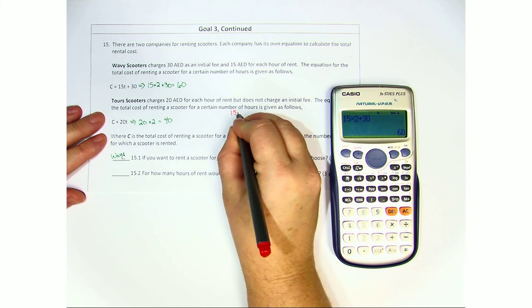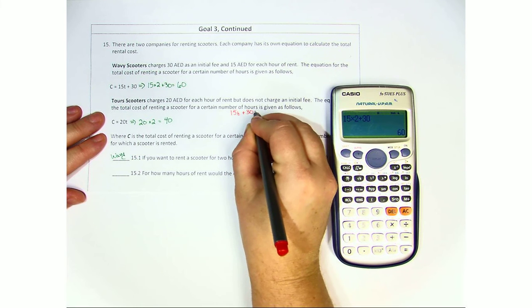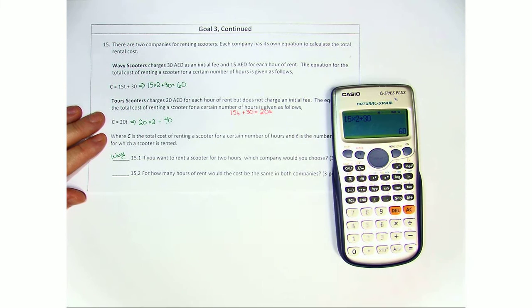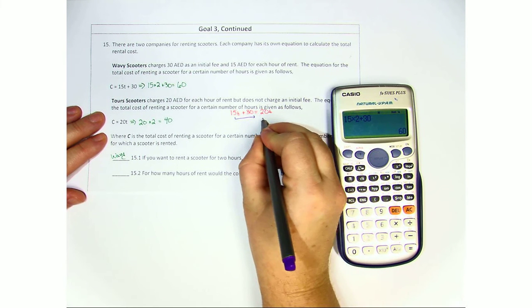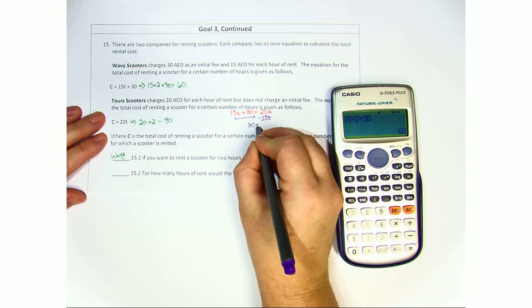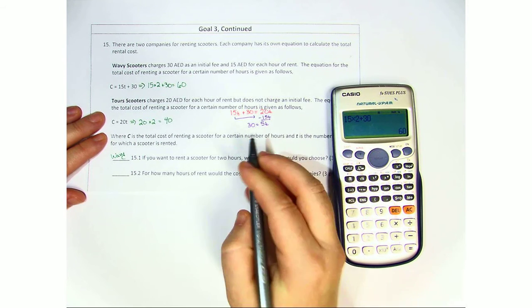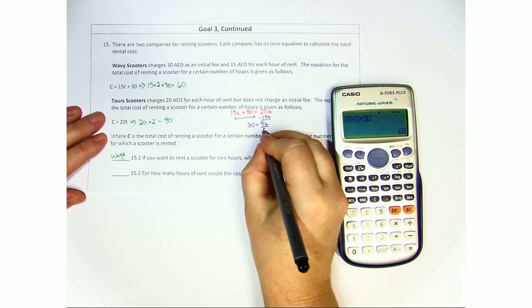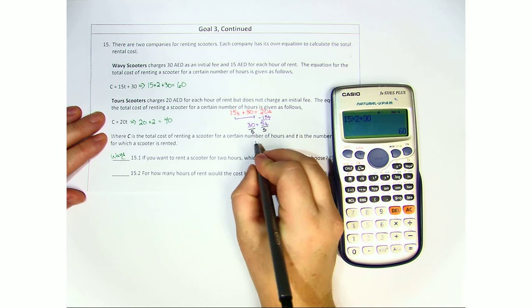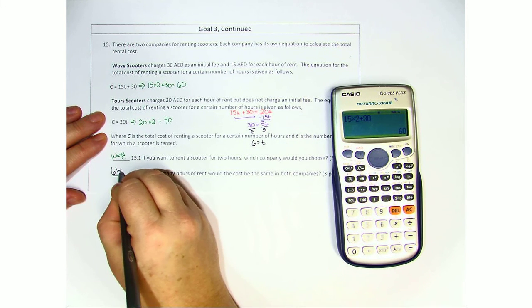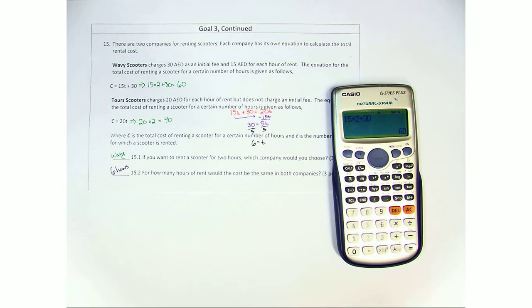So 15T plus 30 equals 20T. We're going to go ahead and move the 15 over. And when we do it, it becomes a negative 15. So we have 30 equals 5T. We go ahead and divide both sides by 5. And we get 6 is the total number of hours until they are equal.